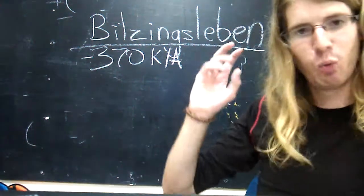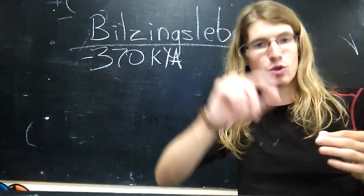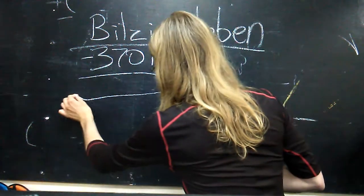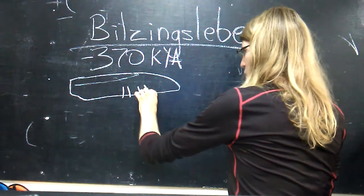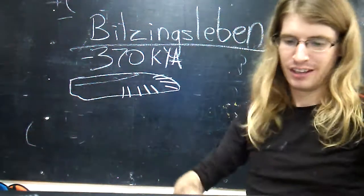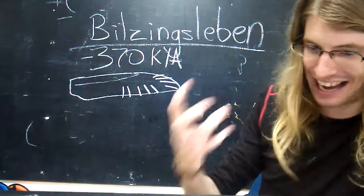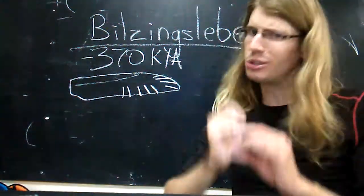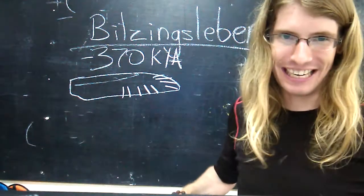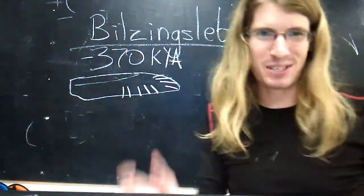370,000 years ago at this Bilzingsleben site we have this beautiful elephant's tibia, and onto the elephant tibia are carved these radial lines. These radial lines, it's really cool to look at and I always get a chill when I look at these lines because clearly this wasn't just an attempt, they're too deliberate. They couldn't have been an attempt to just scratch the meat off the bone or get to the marrow. These marks were made for their own sake.